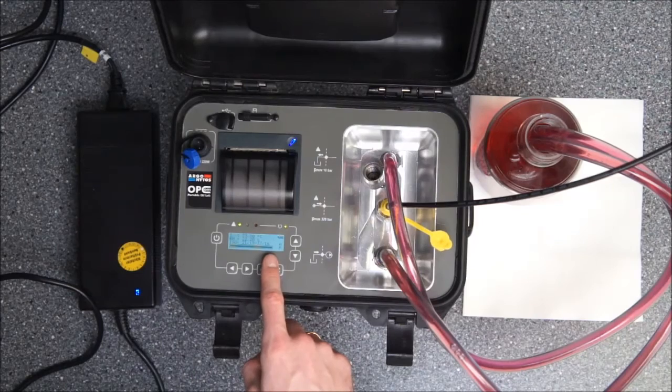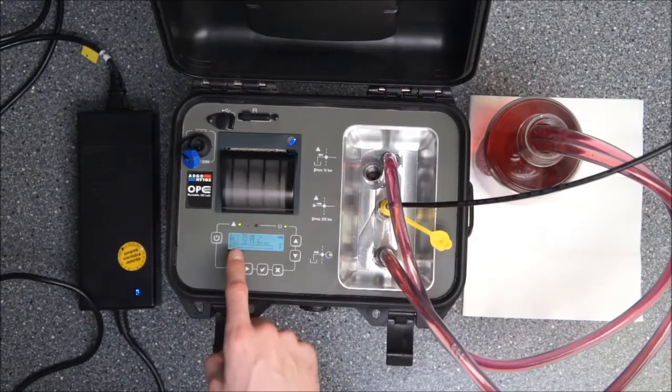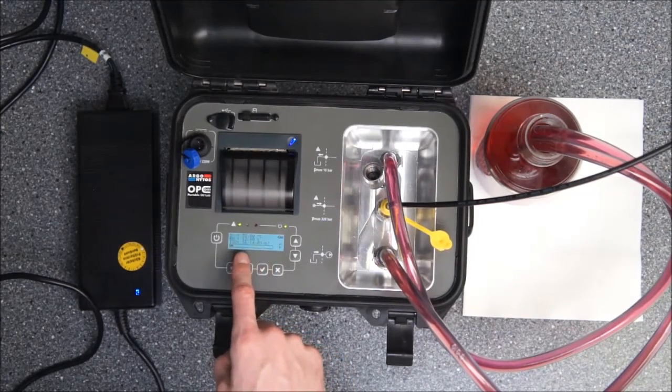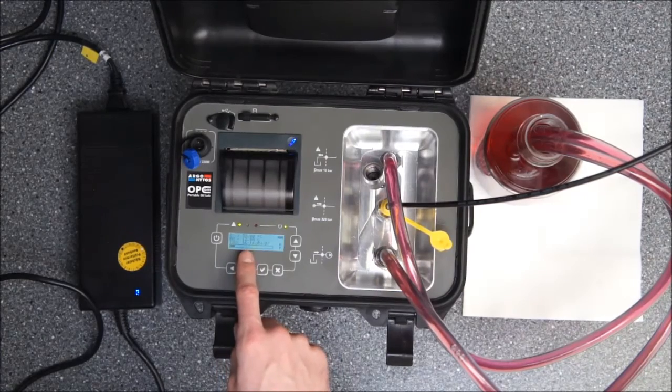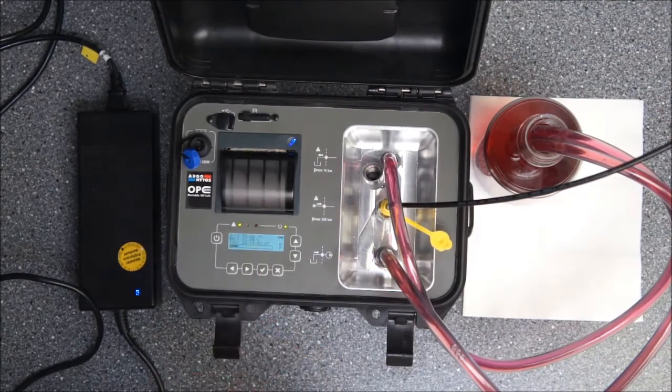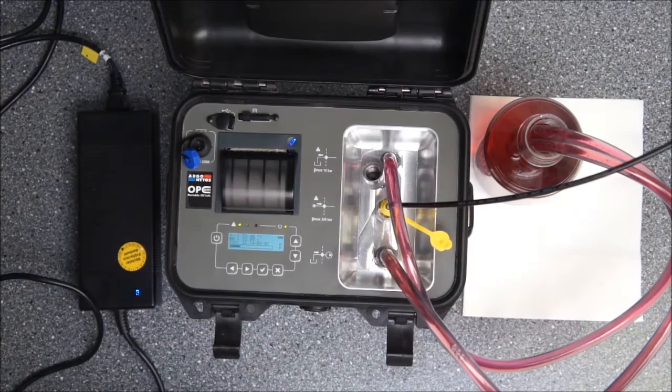After the progress bar is one time again at 100% you will see that we have the new measurement values. And you can see that the values have changed quite significantly. So our system is much cleaner than our oil sample glass that we have measured before.